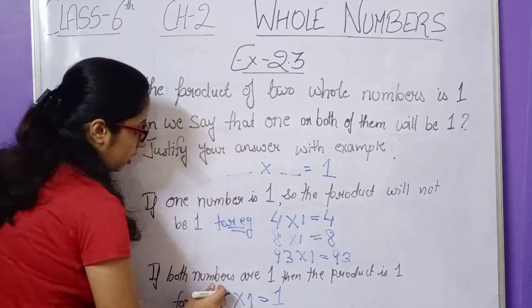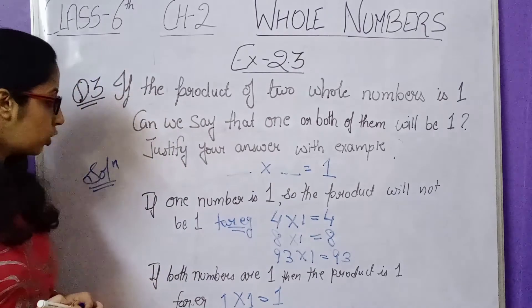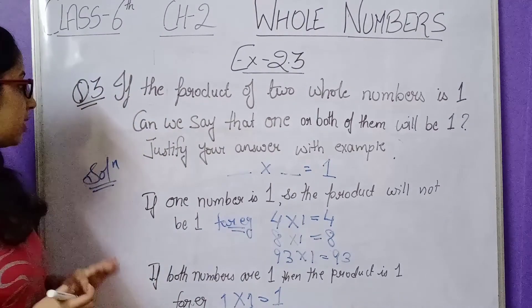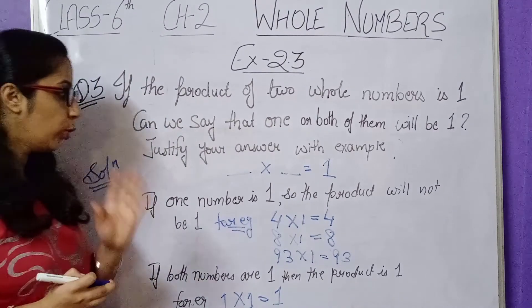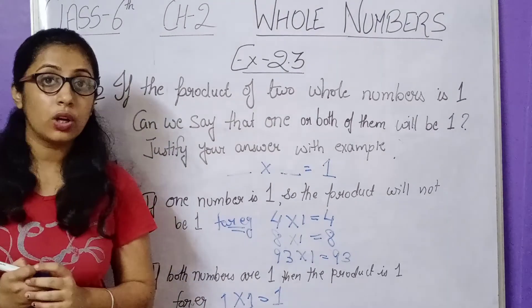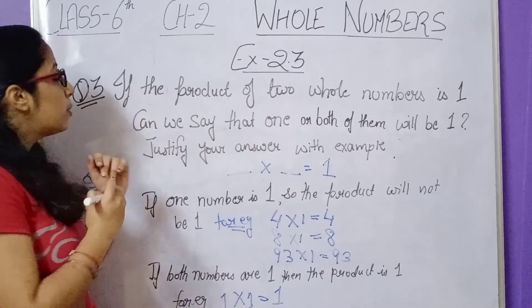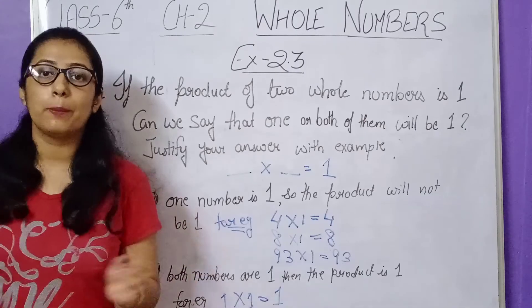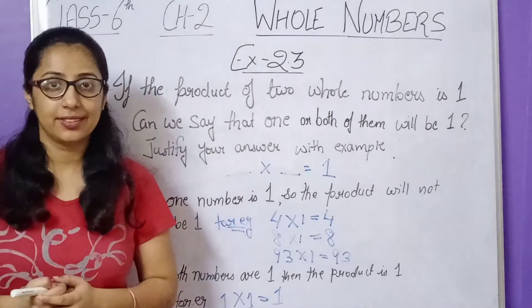So the example 1 multiplied by 1 equals 1 justifies this. This was question number 3. I hope it is clear. Now let's move on to question number 4.